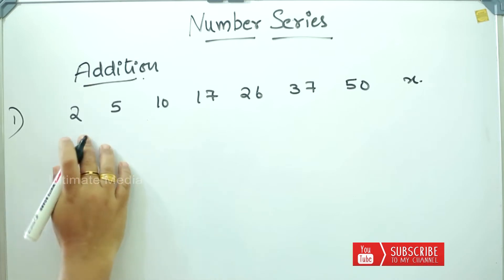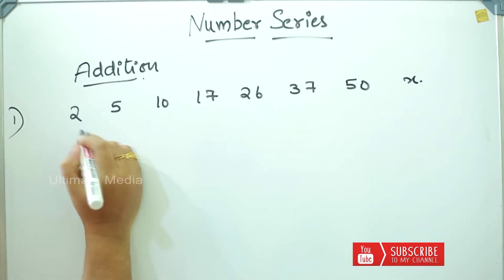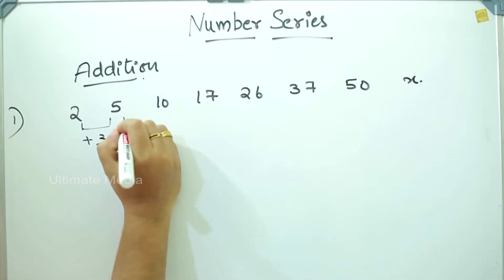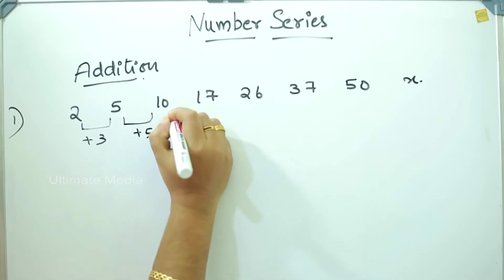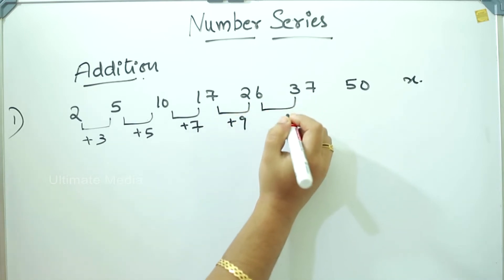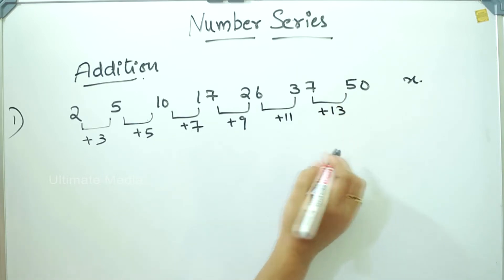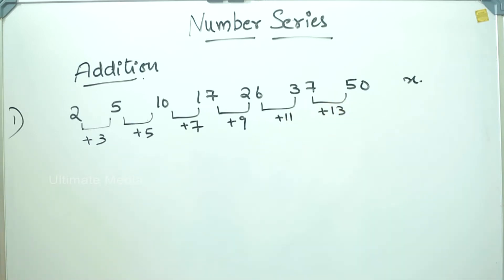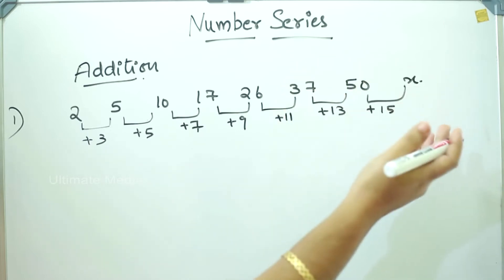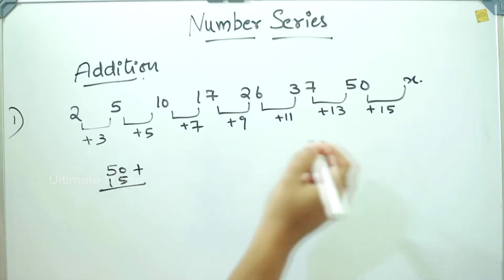We need to look at different examples and find the logic. Is there addition? Is there a square? Is there a cube? Now let's look at the numbers: 3 and 5 — the difference is plus 3. 5 and 10 — difference is 5. 10 and 17 — difference is 7. Next is 9, then 11, then 13. What is the next difference? 15. So we have to answer 50 plus 15. What is the answer? 65.